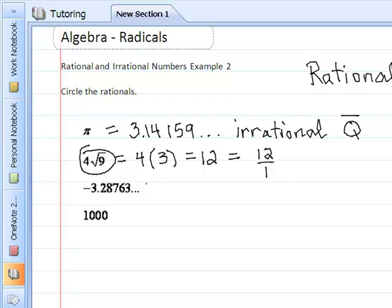The third one is negative 3.28763, again with 3 dots after it. What do the dots mean? This keeps on going, keeps on changing, does not end, does not repeat. This is irrational.